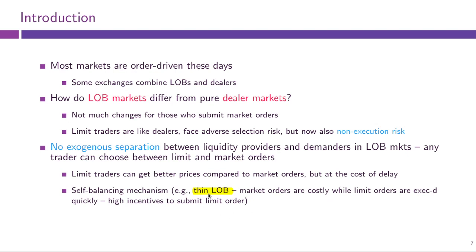So if the limit order book is thin, traders have reasons to submit limit orders instead of market orders and thus replenish the book. Vice versa, if the limit order book is very saturated, the gain from submitting a limit order is not large while the cost is high because of competition from other limit orders. When the book is thick, traders are more incentivized to submit market orders, thus taking liquidity from the market.